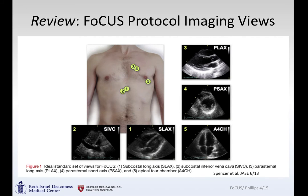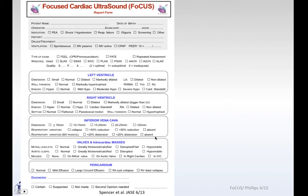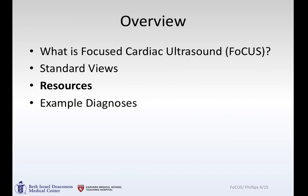Here are your views: parasternal long, parasternal short — rotating 90 degrees. Out of the apex you can rotate around to get different views from the five-chamber all the way up to the three-chamber views. Down here, subcostal long axis and subcostal IVC views, just rotating 90 degrees amongst each other. You can use a reporting sheet to keep track of your findings, from the consensus document from the Journal of American Society of Echocardiography, 2013.